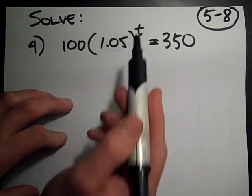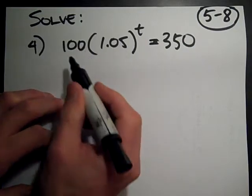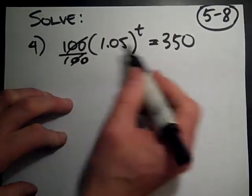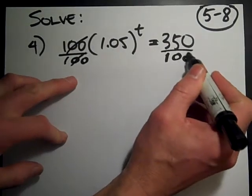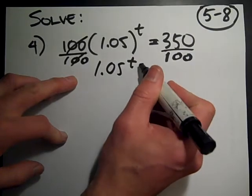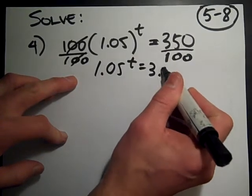Well, we want to get at that t, get it by itself, so we take away the layers. We divide both sides by 100, and those cancel. When we divide this by 100, we get 3.5. So 1.05^t equals 3.5.